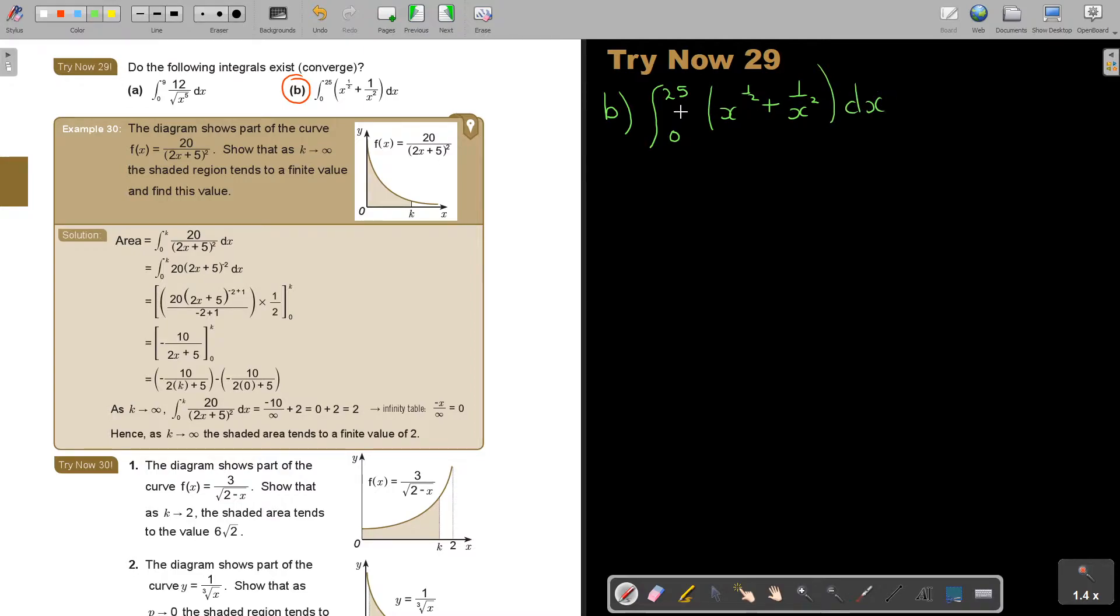25 will not be the problem. But can you see, if you substitute 0 in there, that's not going to work. That's going to give you division by 0. So this is the problem.